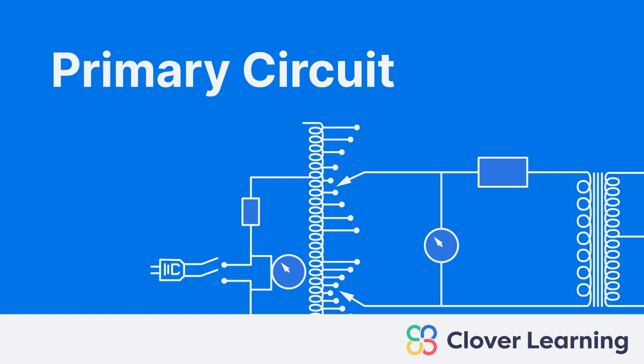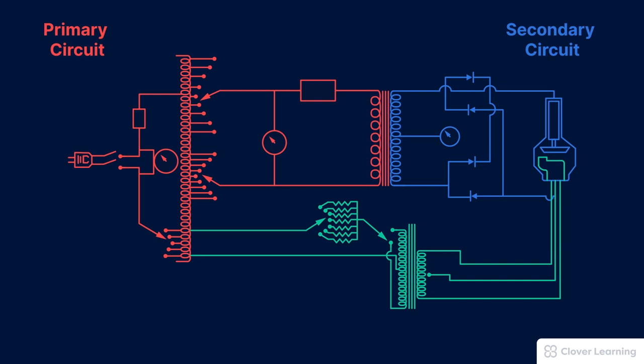This lesson is the first in a series about the x-ray circuit, and we'll be talking about the primary circuit. The complete x-ray circuit is actually three combined circuits: the primary circuit, the secondary circuit, and the filament circuit.